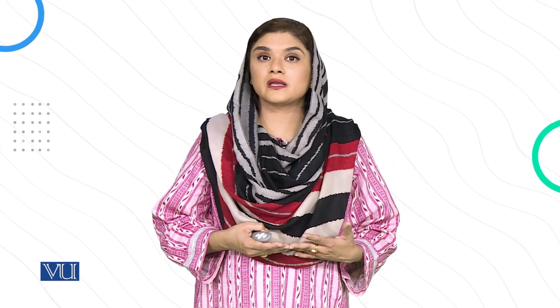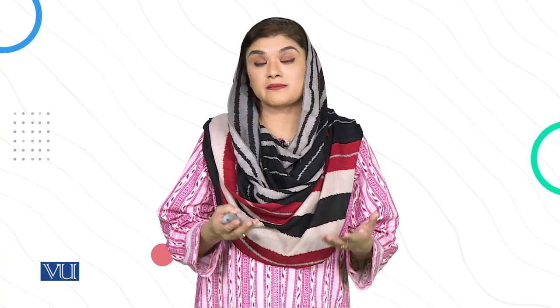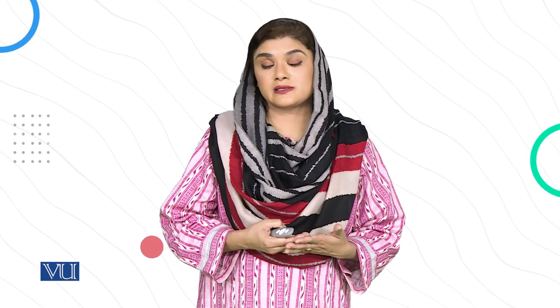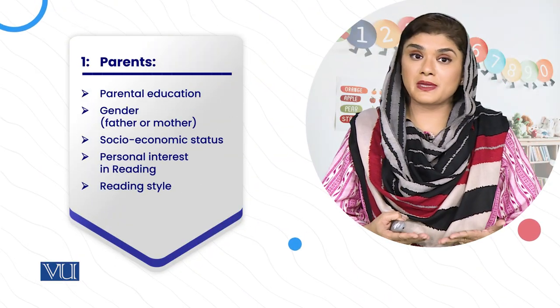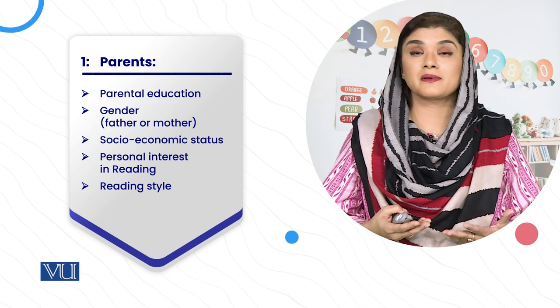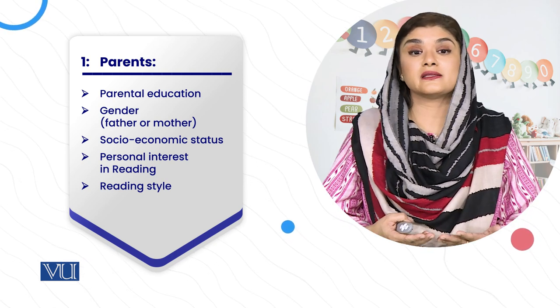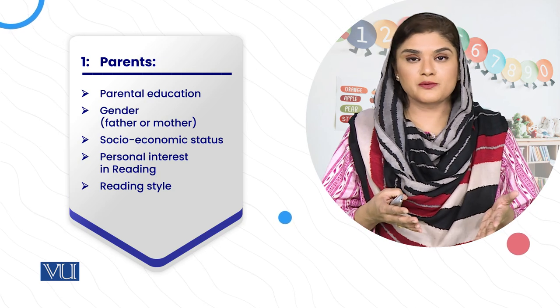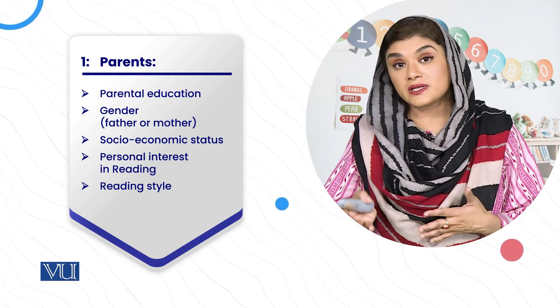The outcomes observed in children also differ, which is why our results vary. For example, if you take parents in e-book studies, you consider parental education, gender, the mother's socioeconomic status, her personal reading interest, and her reading style. These are all features that differ across research samples.